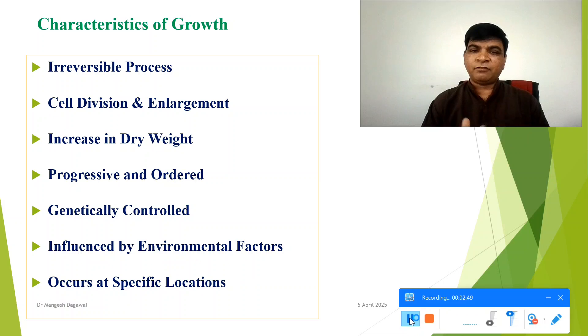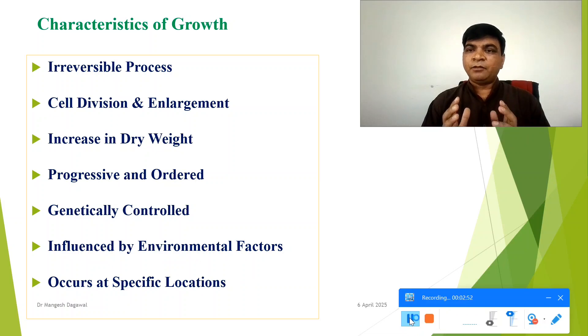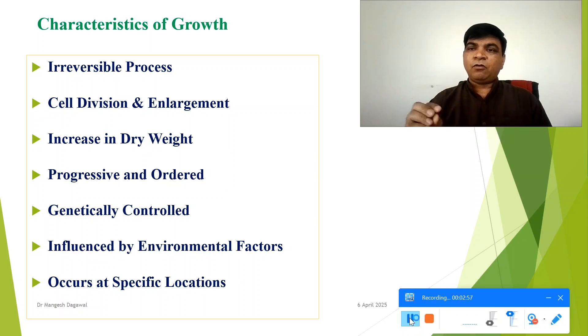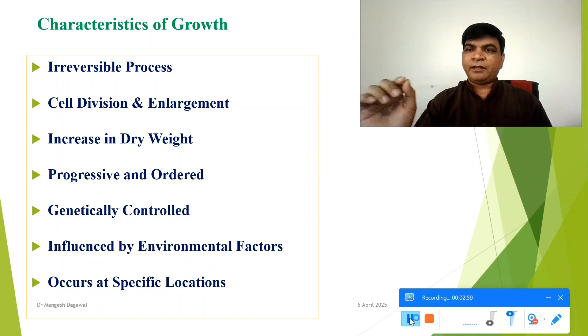Another characteristic is specific location — growth occurs only at a specific location, which is called the meristem. Whatever growth occurs in the plant always occurs at the meristem.